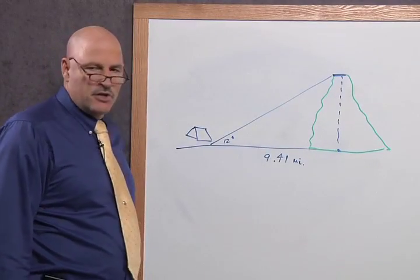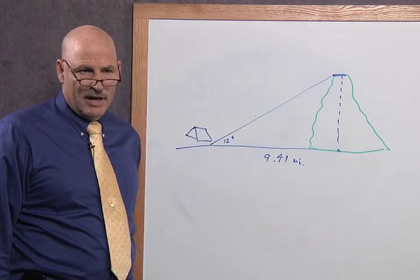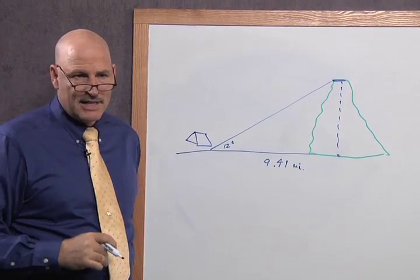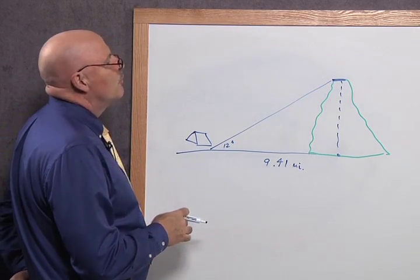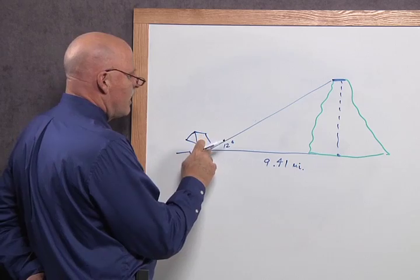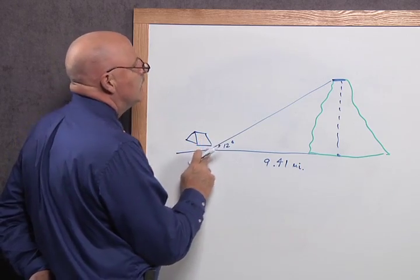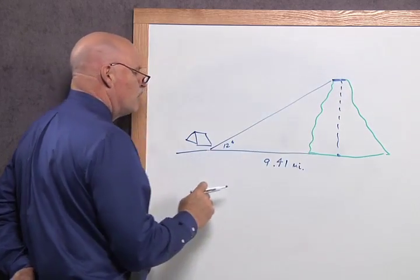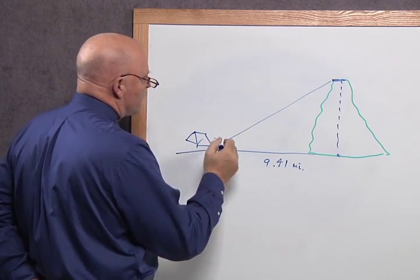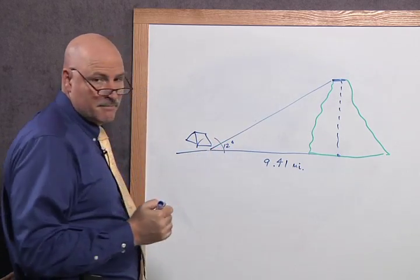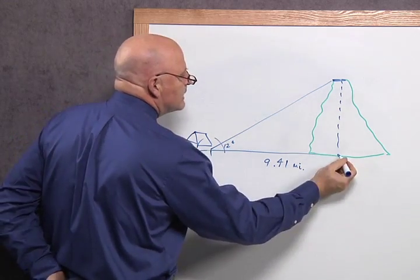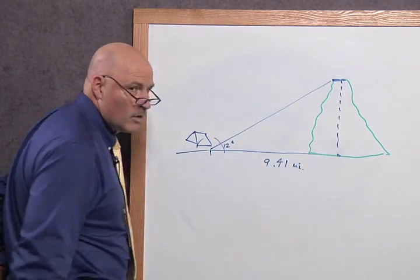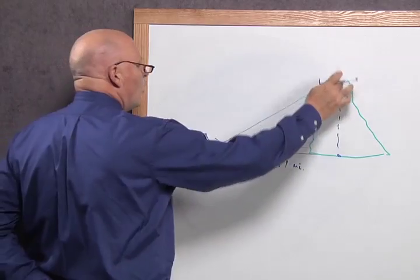Now we're still camping. We found out how tall the tree was, which was interesting information. We got our merit badge, so now we're out camping, and we can tell by using a protractor that it's 12 degrees from our tent site, our campsite, to this mountain. Maybe we're lying down, and we have our protractor, and we see it's 12 degrees. And we can drive on our car, and we find out that the base of the mountain is 9.41 miles. How tall is the mountain?